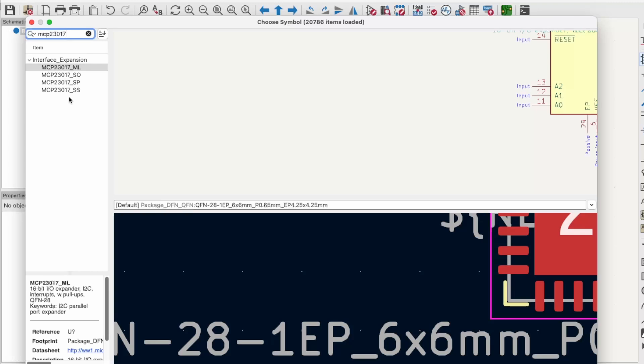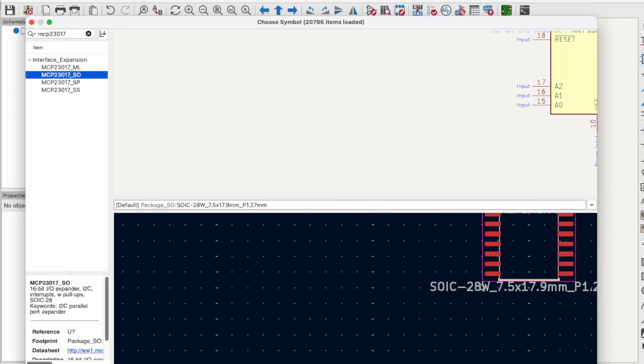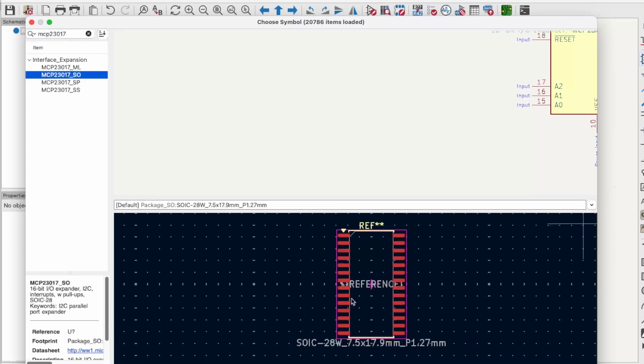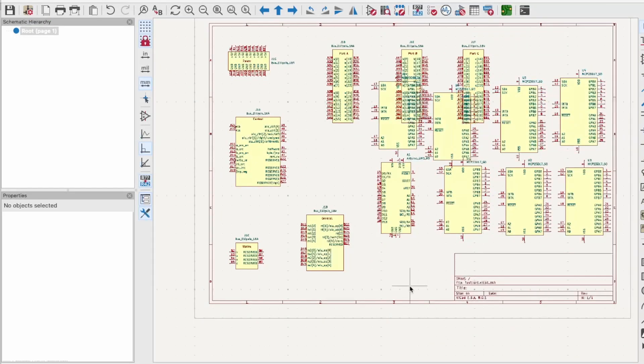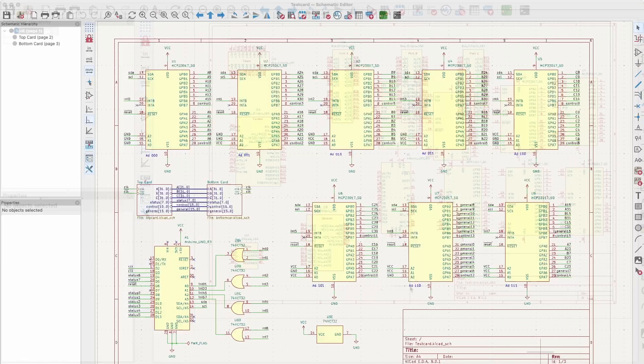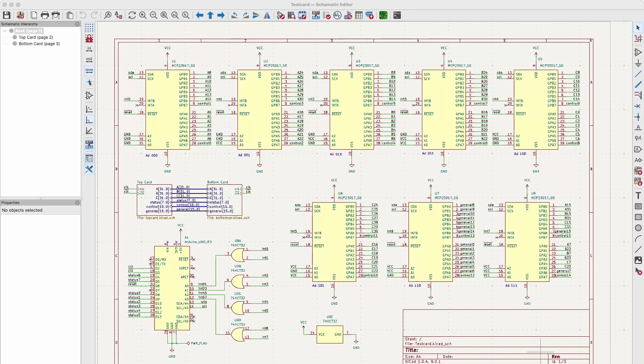So let's add eight of these MCP23017 chips. And we can see that there are four versions. What I'm going to be using is the SO package. So I'll select this one and then create eight of them. Right, so I've got all the pieces here. It's a complete and utter mess. So what I'll do is I'll rearrange this using some hierarchical sheets, get it all organized, get it all wired up, and then I can start developing the PCB. I've rearranged things here to tidy up the layout.